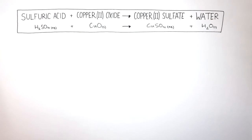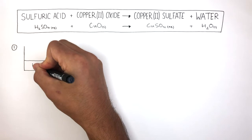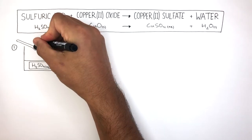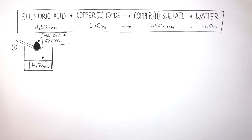To carry out this experiment, first we start off with a beaker which has H₂SO₄, sulfuric acid, and then you use a spatula to add the copper oxide. It's really important to add the copper oxide in excess to ensure all of the sulfuric acid has reacted. This means there will be no acid in the products, so your soluble copper sulfate crystals will be pure.